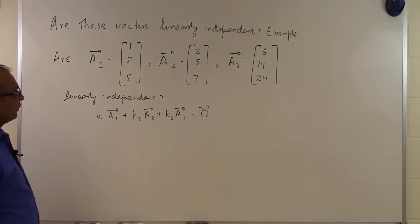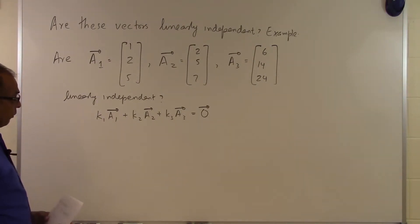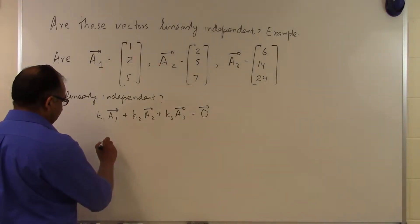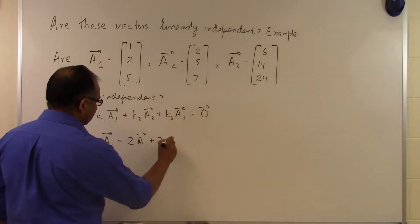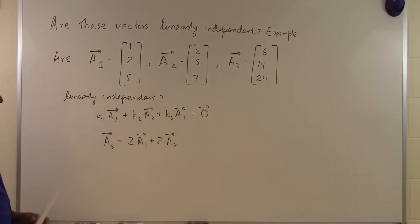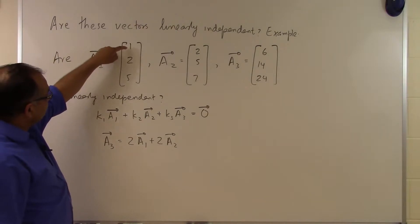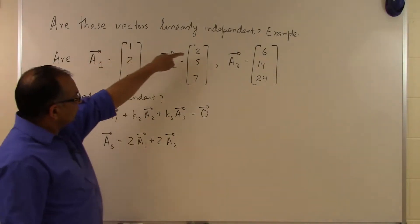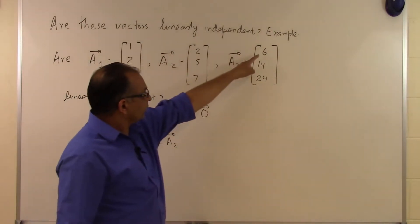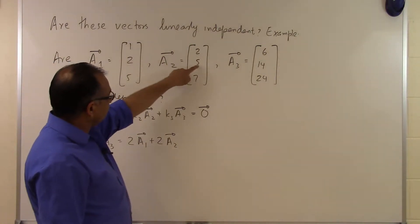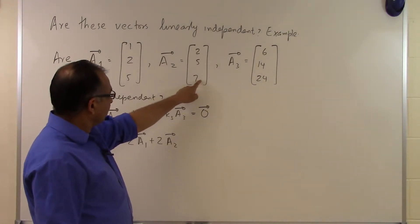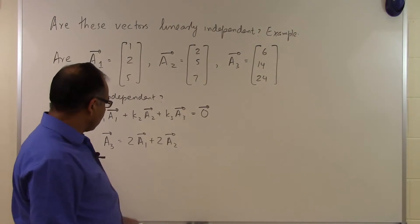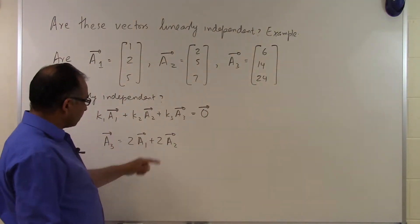To justify whether the vectors are linearly independent, we need to check if there is any solution other than the trivial one. By observation, it looks like A3 equals 2 times A1 plus 2 times A2. Multiplying the first components: 2×1=2 and 2×2=4, giving 6. For the second: 2×2=4 and 2×5=10, giving 14. For the third: 2×5=10 and 2×7=14, giving 24. So A3 = 2A1 + 2A2.